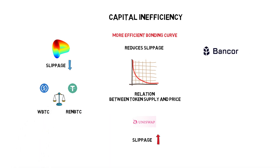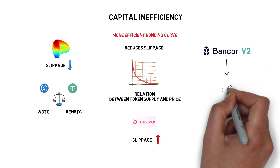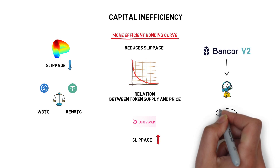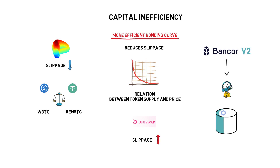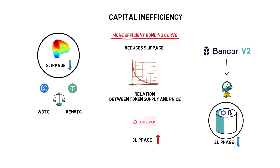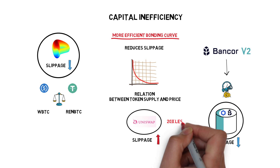Bancor V2, thanks to the integration with price oracles, can provide more efficient bonding curves even for pools where the price of one asset is volatile in relation to the other. Bancor V2 bonding curves, even though not exactly as efficient as Curve's bonding curves for stable assets, still provide less slippage and better capital efficiency. According to the Bancor team, the new DAMM pool can provide similar slippage to standard liquidity pools with 20x less capital in the pool.